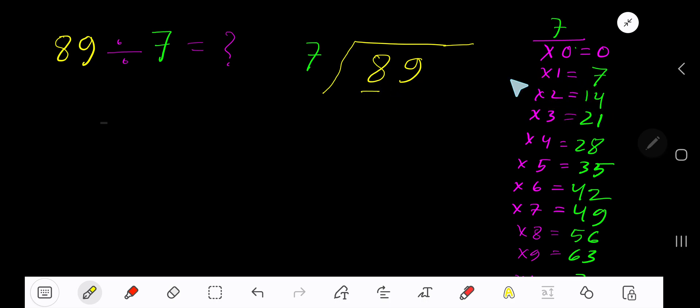1 times 7 is 7. Subtract 1, bring down the next digit. 7 goes into 19 how many times? 2 times. 2 times 7 is 14. Subtract, you are getting 5.